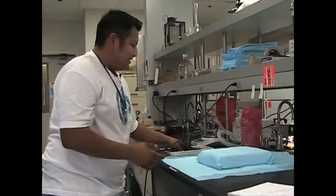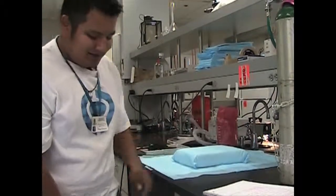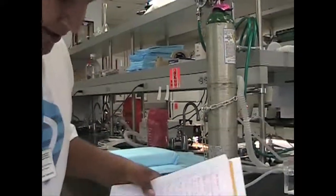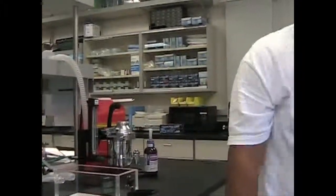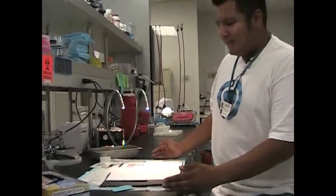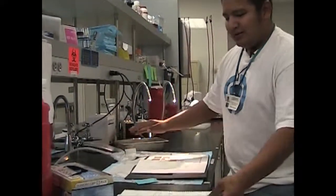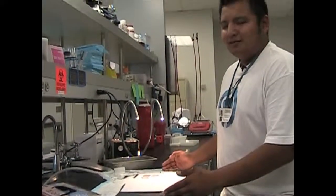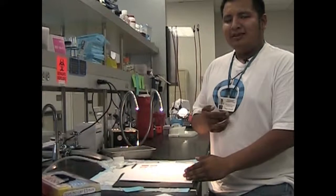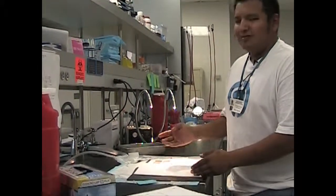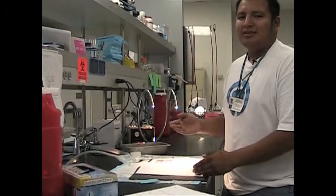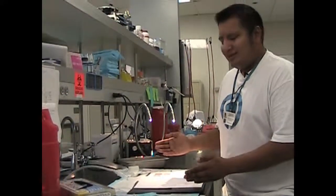Once they're shaved and sanitized we bring them over here to the surgery area. This right here is where the surgery happens. Once they're unconscious we put the nose cone on them, and when we make the incision at the abdomen we put it at one percent. The reason we lower that is because you don't want your mice to overdose and die, and that's really bad.